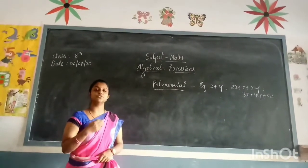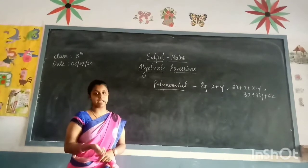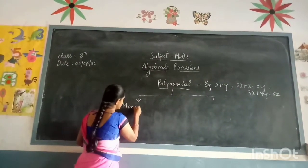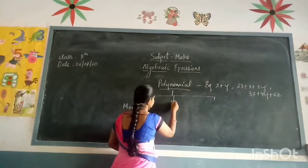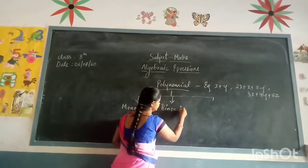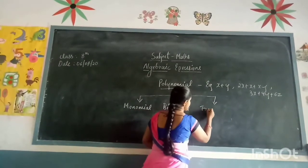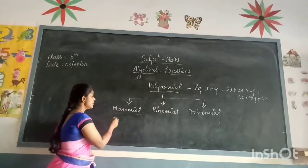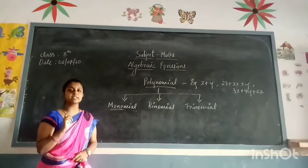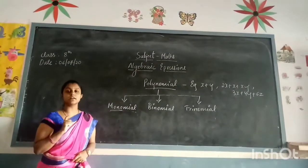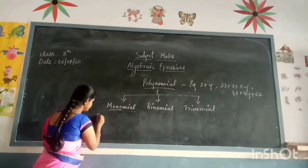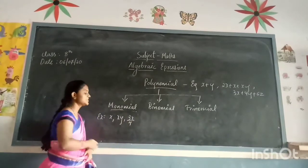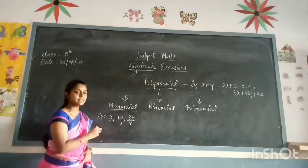Polynomials are again divided into three parts: monomial, binomial, and trinomial. What do you mean by monomial? The word 'mono' refers to single. The polynomial which has a single term is called a monomial. For example, x, or xy, or 3x by 4 — all are called monomials because there is only a single term.